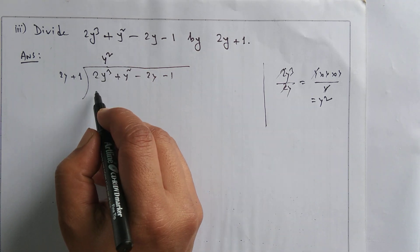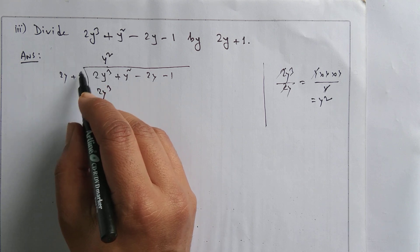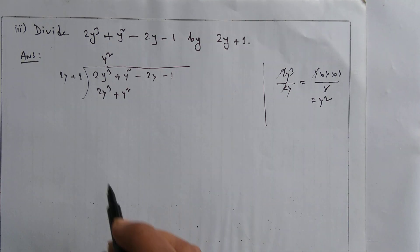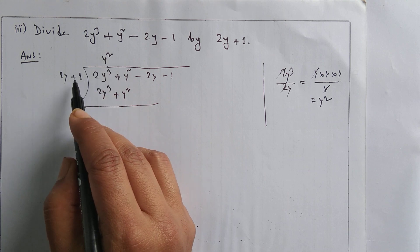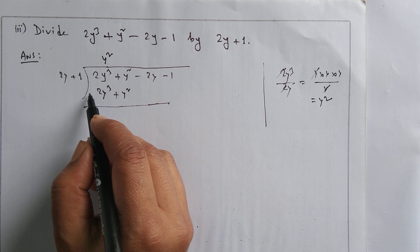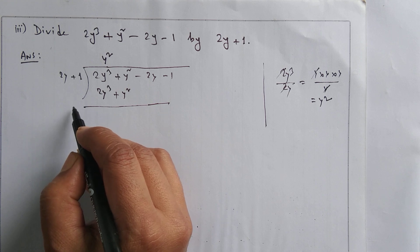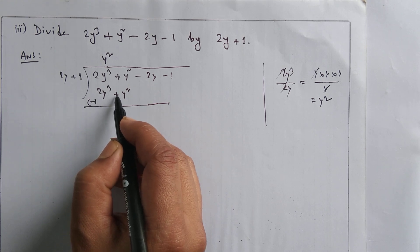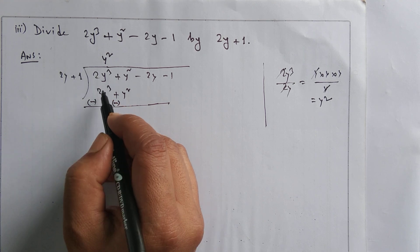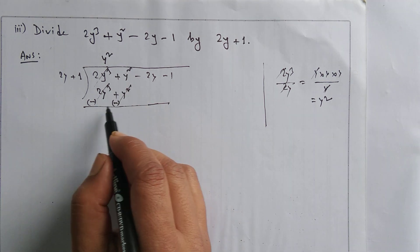Now 2y × y² is 2y³, and 1 × y² is y², so the sign is plus. Now by the rule of division we subtract. Minus of plus becomes minus. So plus 2y³ minus 2y³ cancels, and plus y² minus y² also cancels. Both terms are cancelled.